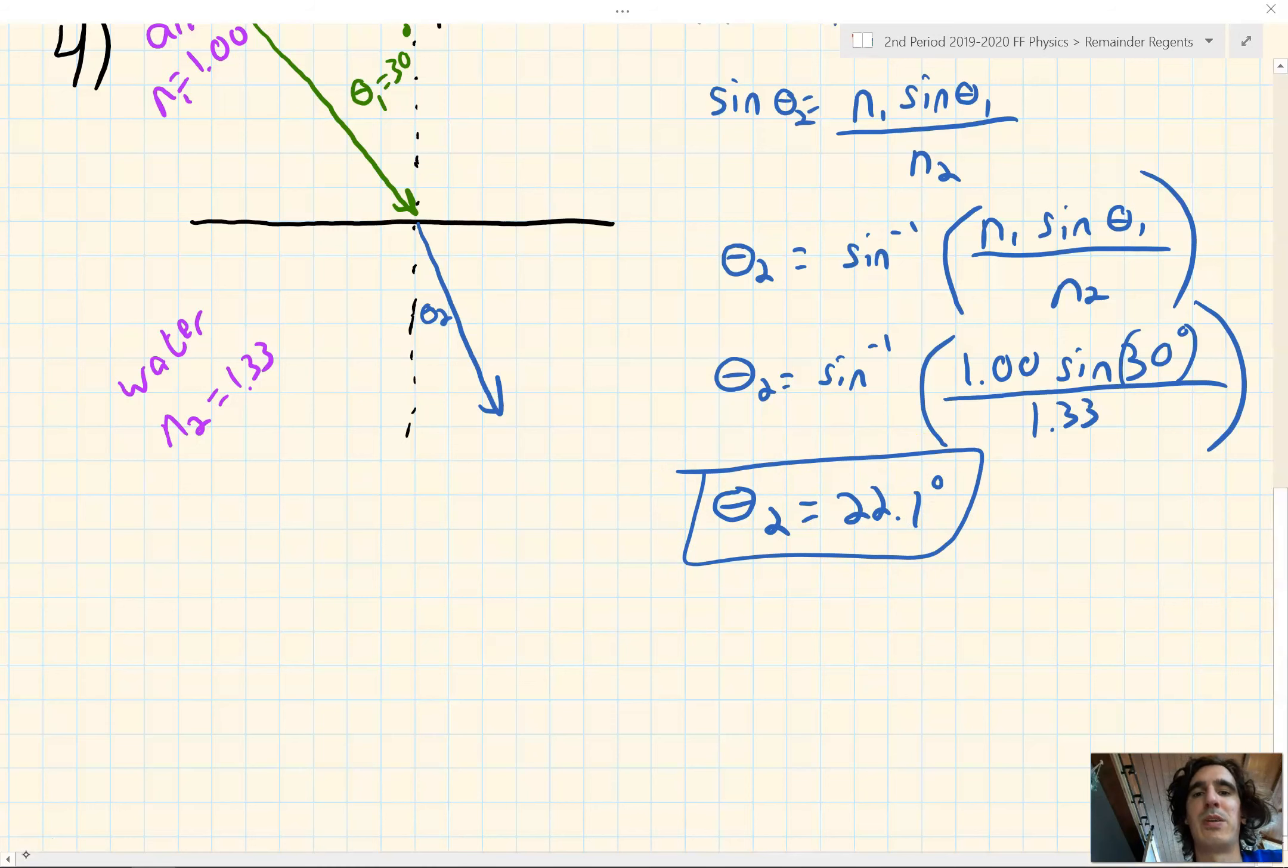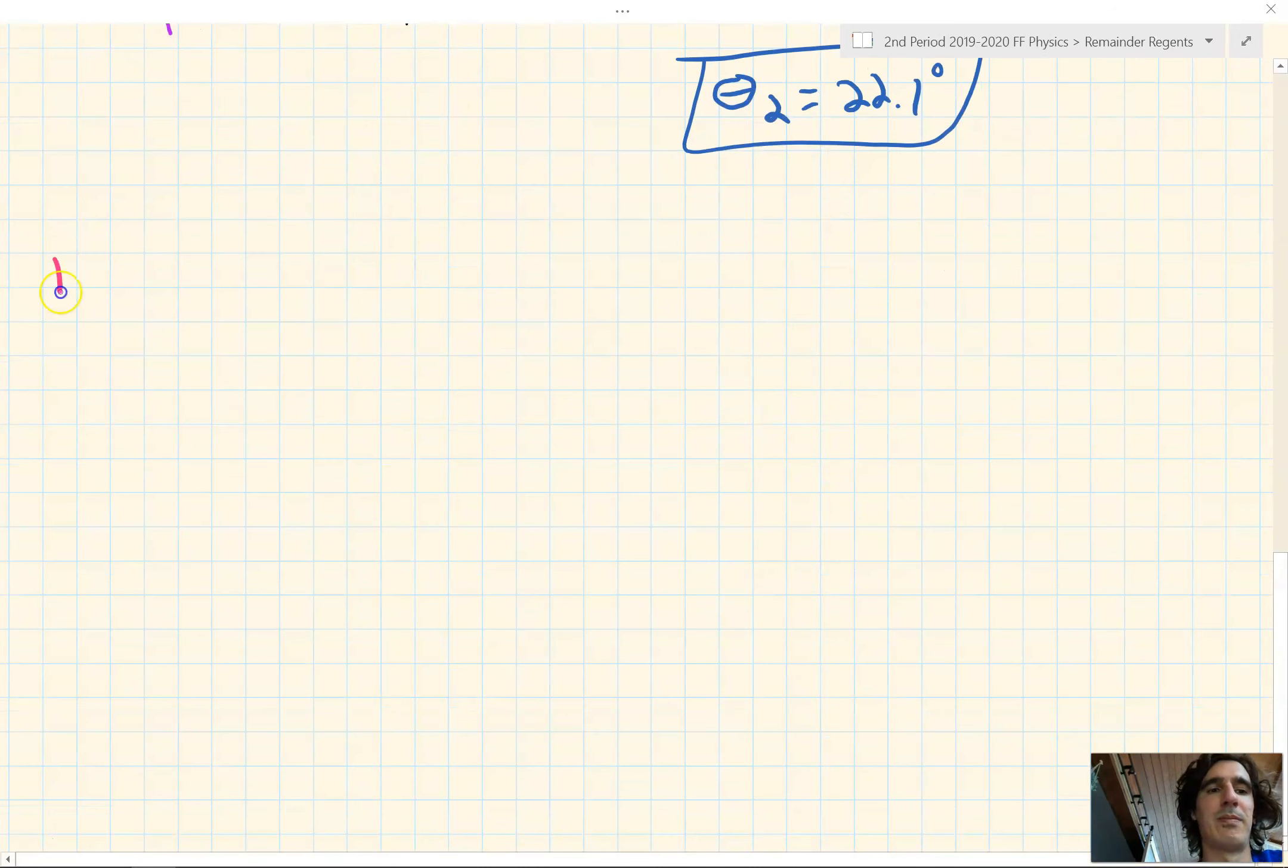Let's also do number 11 together. Number 11 reads, a light ray traveling through corn oil at a speed of 2.04 times 10 to the 8th meters per second speeds up as it enters ethyl alcohol. What is the speed in ethyl alcohol? So it's going from corn to ethyl alcohol.